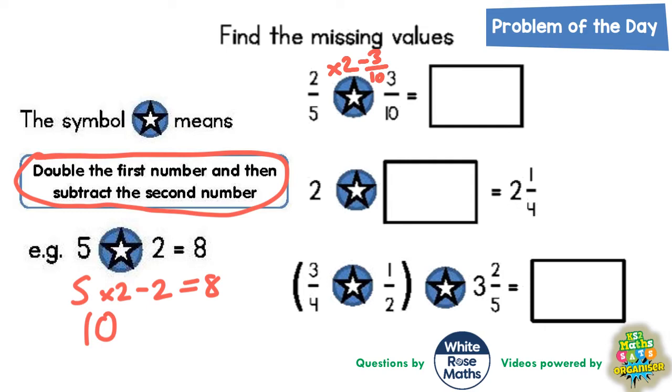On the second one it's going to be times 2 and take away something because we don't know what that missing number is so we'll put a question mark.